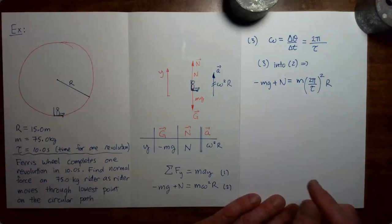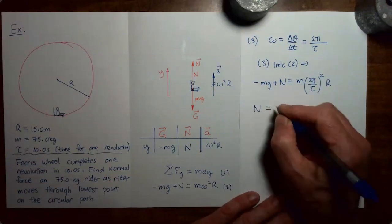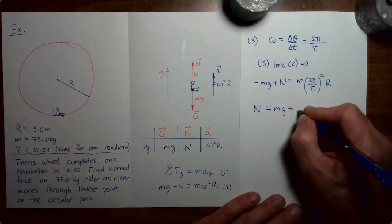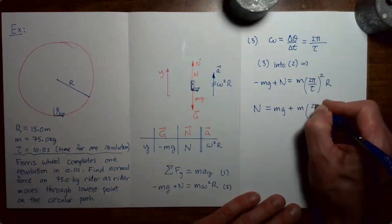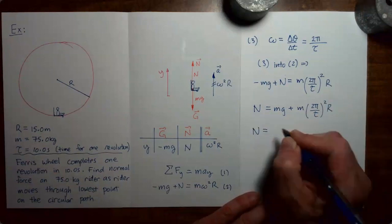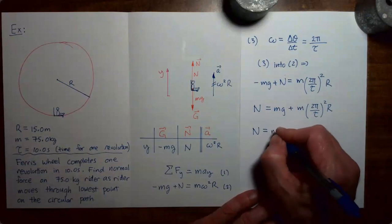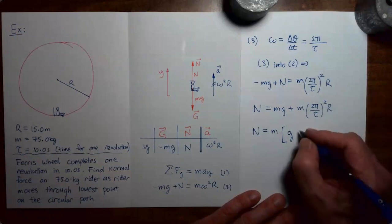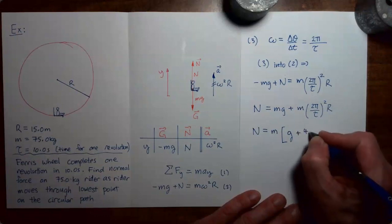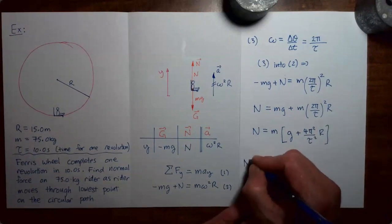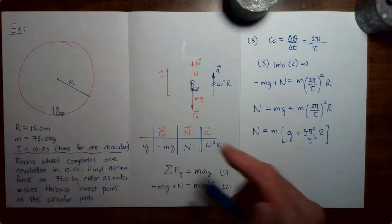Now let's solve for the normal force. So we have normal force equals, just move that mg to the other side where it picks up a plus sign. And then that other term carries down. Now I'm going to pull out the mass. So I have normal force equals m times g. Actually square this term to get 4 pi squared over tau squared and then times r.